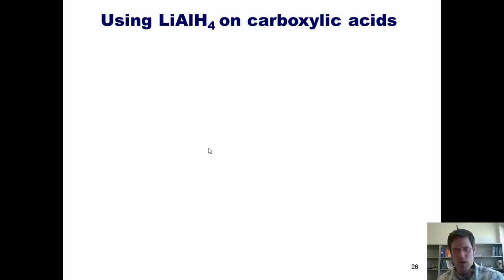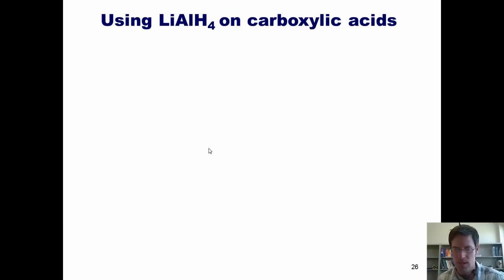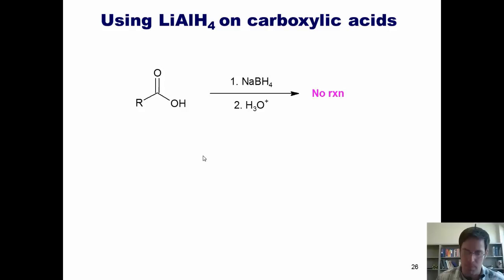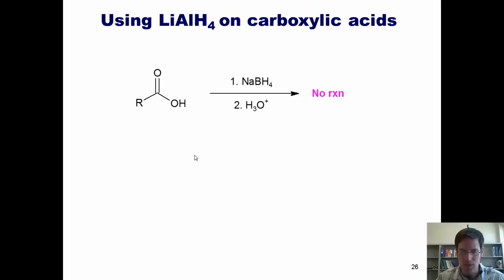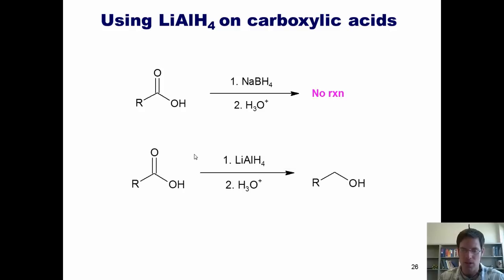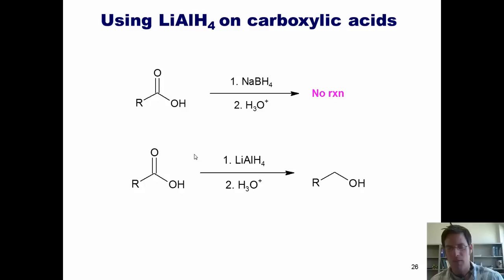So what occurs when I add a hydride reagent to a carboxylic acid? Carboxylic acids are not as easy to reduce as aldehydes and ketones. If you treat a carboxylic acid with sodium borohydride, nothing happens—sodium borohydride is not a strong enough source of H-minus to reduce a carboxylic acid. So we use lithium aluminum hydride, which is an extremely reactive source of H-minus. Sodium borohydride won't touch a carboxylic acid; if we want to reduce a carboxylic acid, we have to use lithium aluminum hydride.